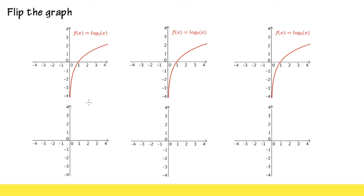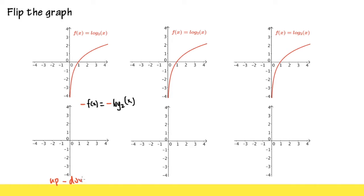For the first situation, this is the original — this is the f(x). What I'm going to do is multiply f(x) by negative 1, giving us negative f(x). That is equal to negative log base 2 of x. I'm pretty much just multiplying by negative 1 on both sides from the original. The effect of this is that we will take the original graph and then flip it upside down — this is the upside-down situation.